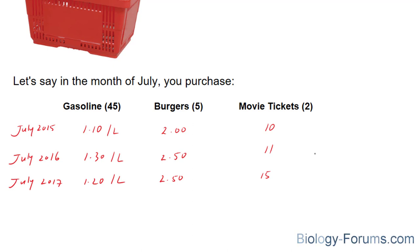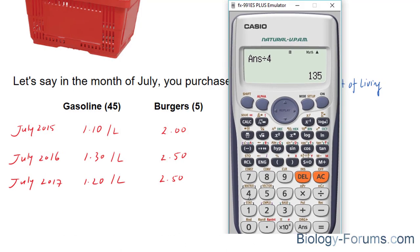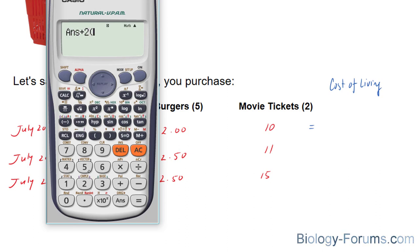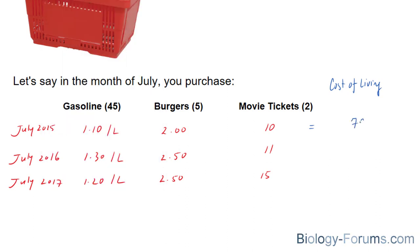What we're going to do next is create a fourth column, and we're going to call that fourth column the cost of living. The cost of living adds up the prices for that month. Let me demonstrate. We spent $1.10 for the 45 liters. That adds up to $49.50, plus two times the five burgers that you purchased, which adds up now to $59.50, and two times the $10 you spent on movie tickets, which adds up to $79.50.